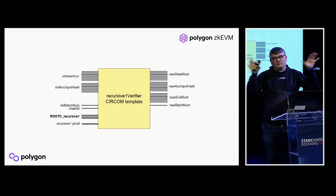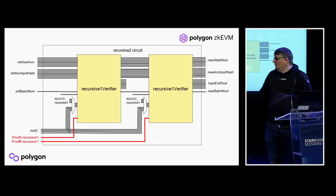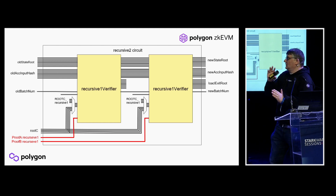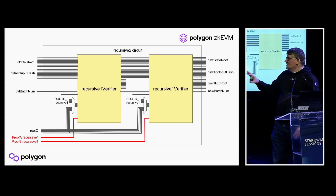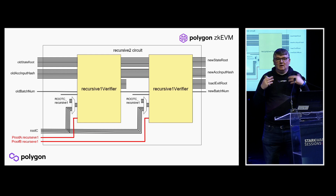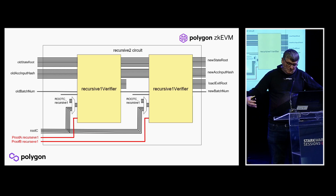Now with this template we want to build a circuit that aggregates two proofs. We take one proof and another proof and create a circuit that is a proof of two proofs. To do this, we take two of these templates and put them together in one circuit. The input to the circuit will be two proofs, and it will output a single proof aggregating the two. So we can take two basic proofs and aggregate them into one.